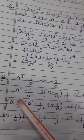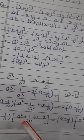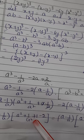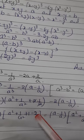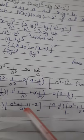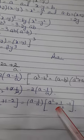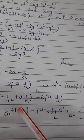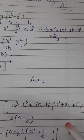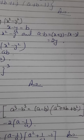We get (a - 1/a)(a² + 1 + 1/a²) minus 2(a - 1/a). Both terms carry (a - 1/a), so we take it common. Remaining is a² + 1/a² + 1 - 2, which simplifies to a² + 1/a² - 1. So the answer is (a - 1/a)(a² + 1/a² - 1). I hope you understood these questions. Thank you.